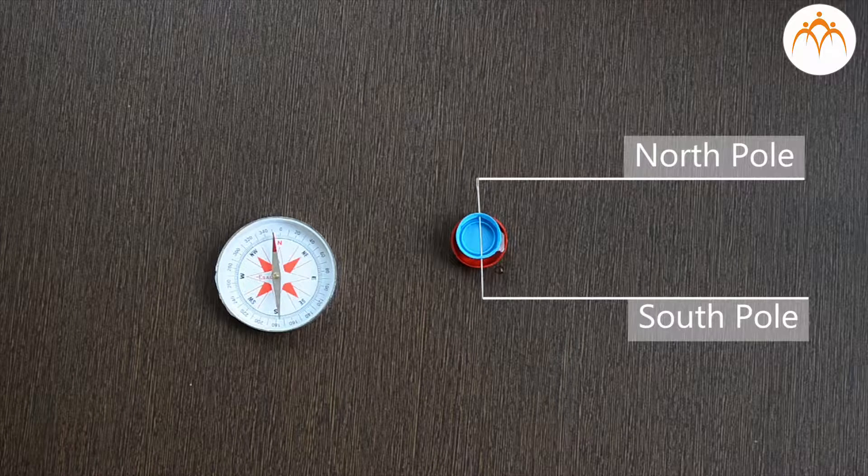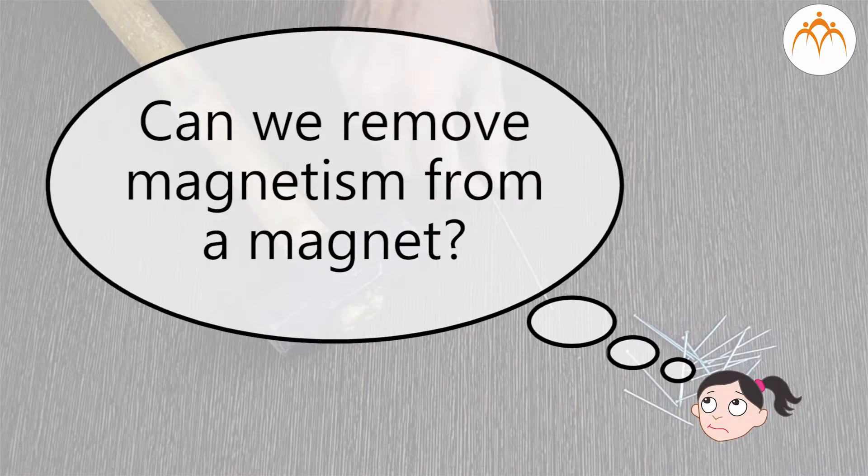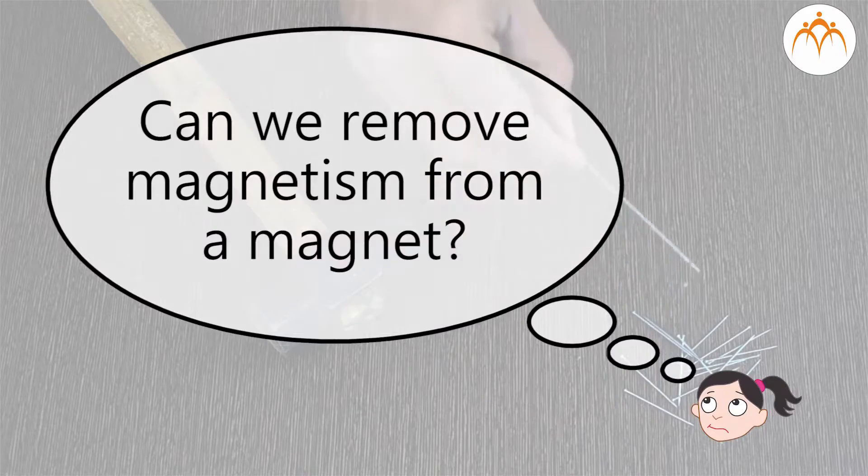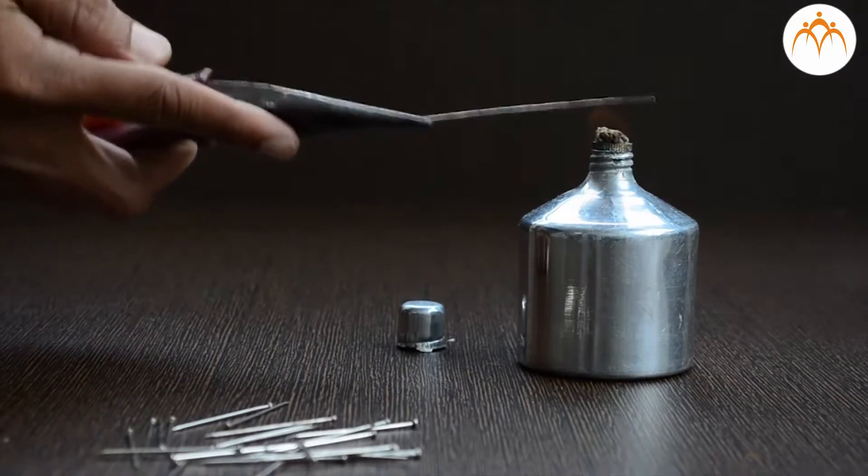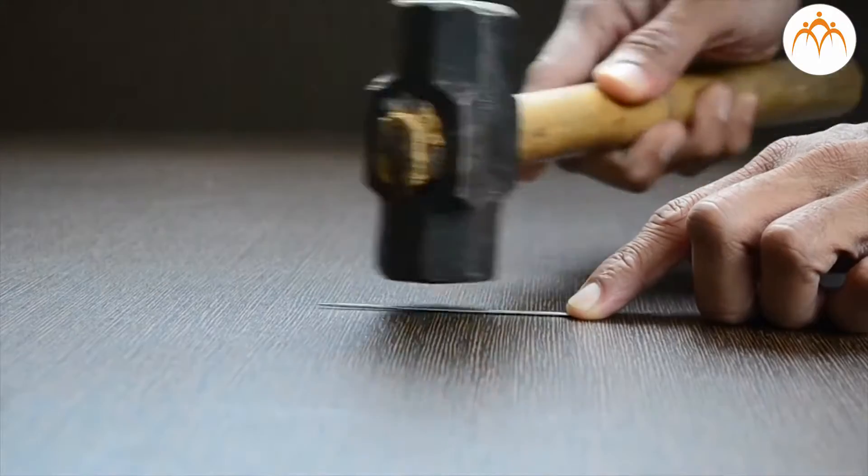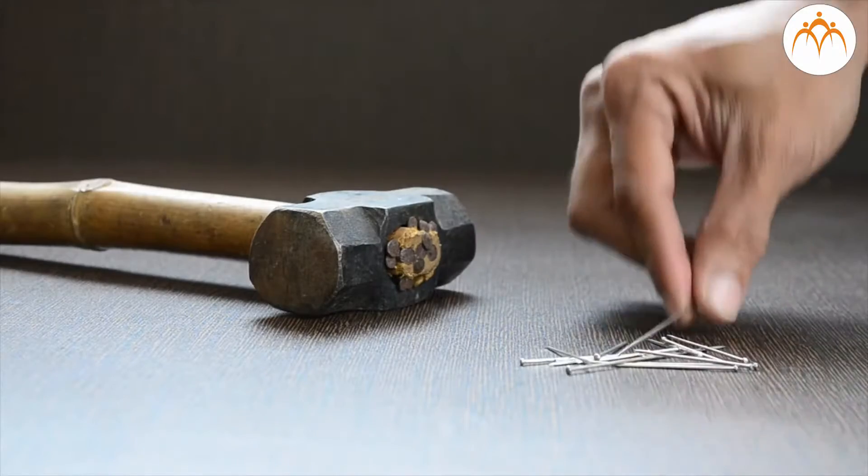Can magnetism be removed from a magnet? Yes, if we heat it or if we hammer it for a long time, materials lose their magnetic property.